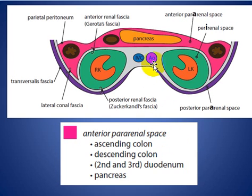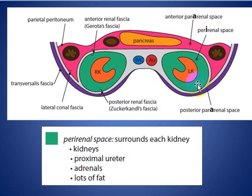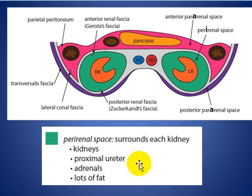The anterior pararenal space, shown in pink color, contains the pancreas, ascending colon, descending colon, and the second and third parts of the duodenum. The perirenal space, shown in green color, contains the kidney, the proximal ureters, adrenal glands, a lot of fat, and a network of small vessels, nerves, and lymphatics.